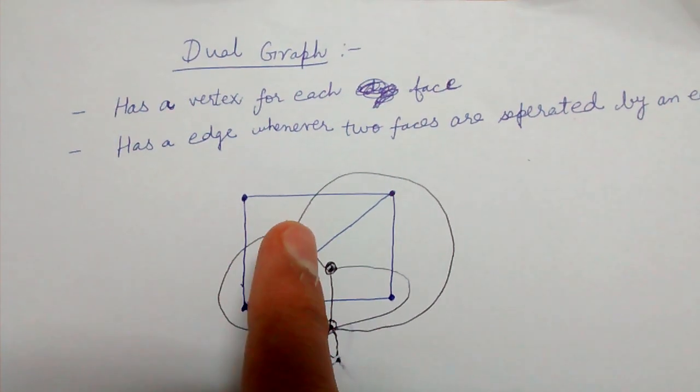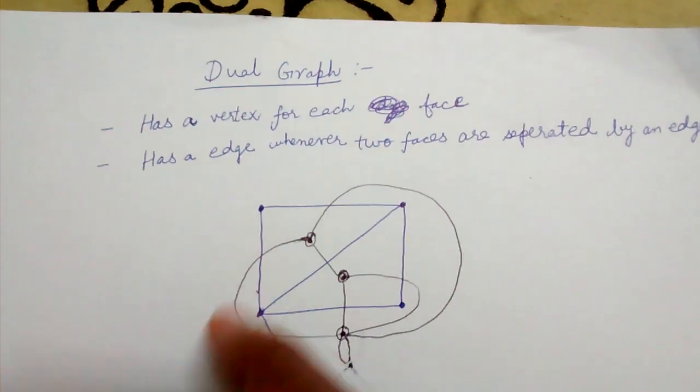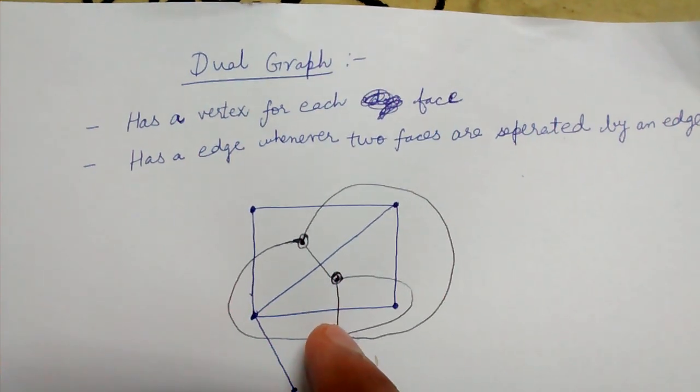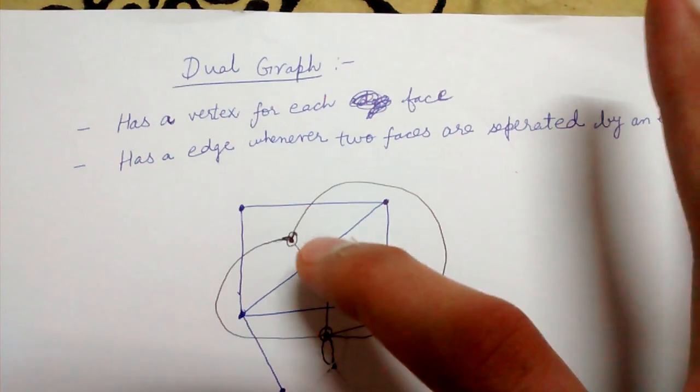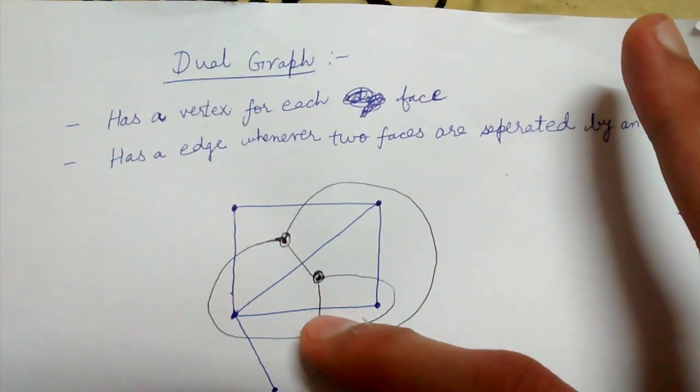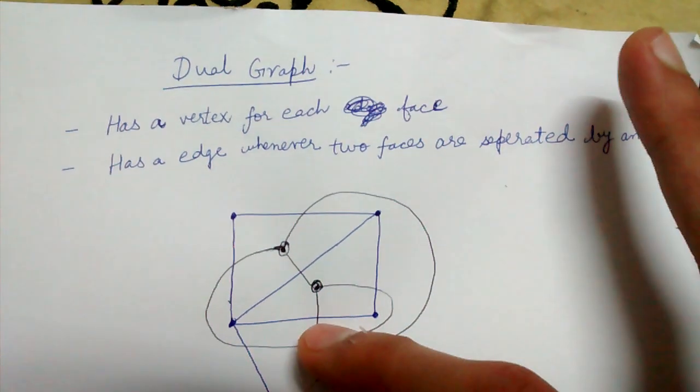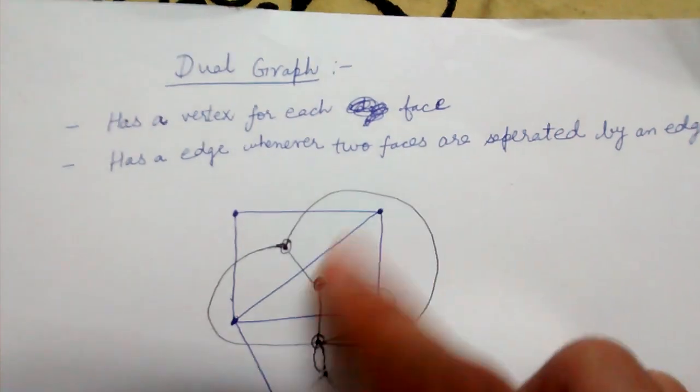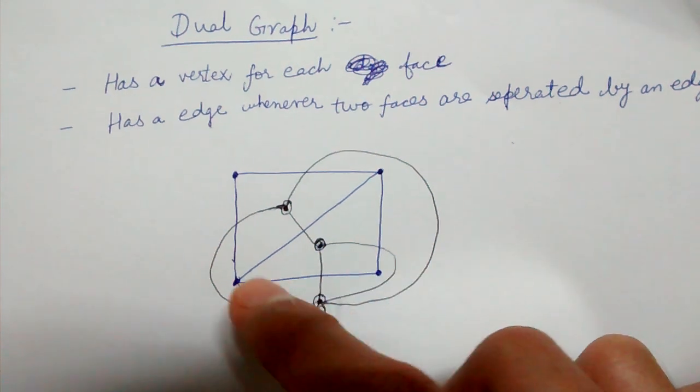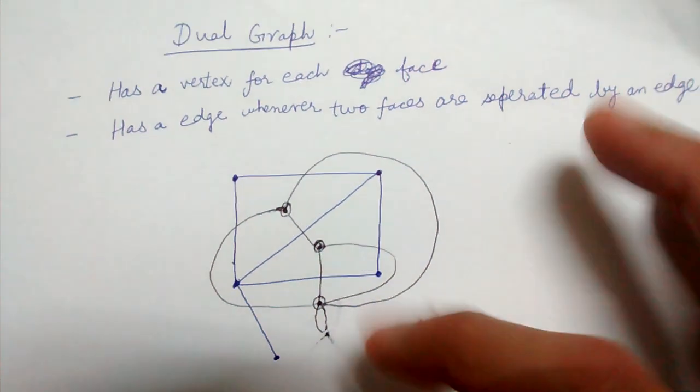Now this face, this triangular face and the infinite extending face are separated by this edge. So we draw this edge. Similarly this and this are separated by this edge so we draw this edge. Similarly this and this are separated so we draw this edge. Similarly this triangular face and this are separated by this edge so we draw this edge. So these four edges we get.